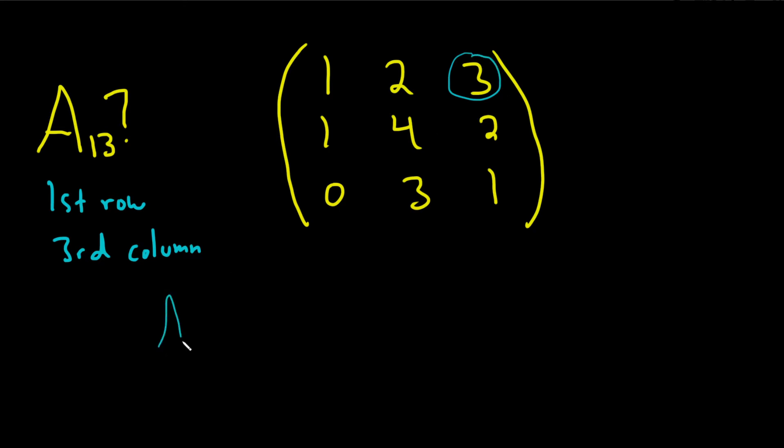The formula, in general, for a cofactor is a sub ij equals negative 1 to the i plus j, where i is the row and j is the column, times m sub ij, where this is called the minor.